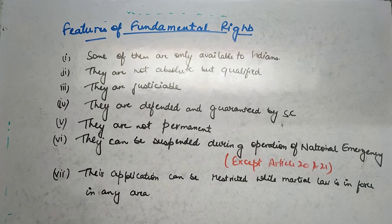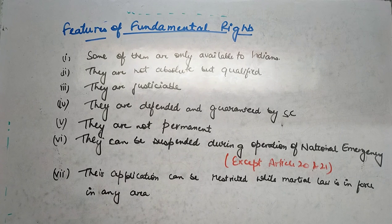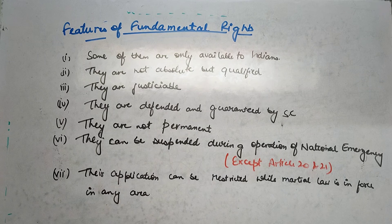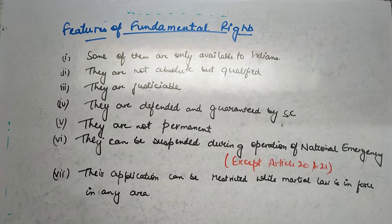That person can directly appeal to the Supreme Court if their fundamental right is violated. Next, they are not permanent — they can be curtailed or repealed by a constitutional amendment act. However, it must be kept in mind that the basic structure of the constitution should not be affected. I have already discussed the sixth point — they can be suspended during the operation of a national emergency, except Article 20 and 21, which cannot be suspended even during a national emergency. The last feature is that their application can be restricted while martial law is enforced in any area.